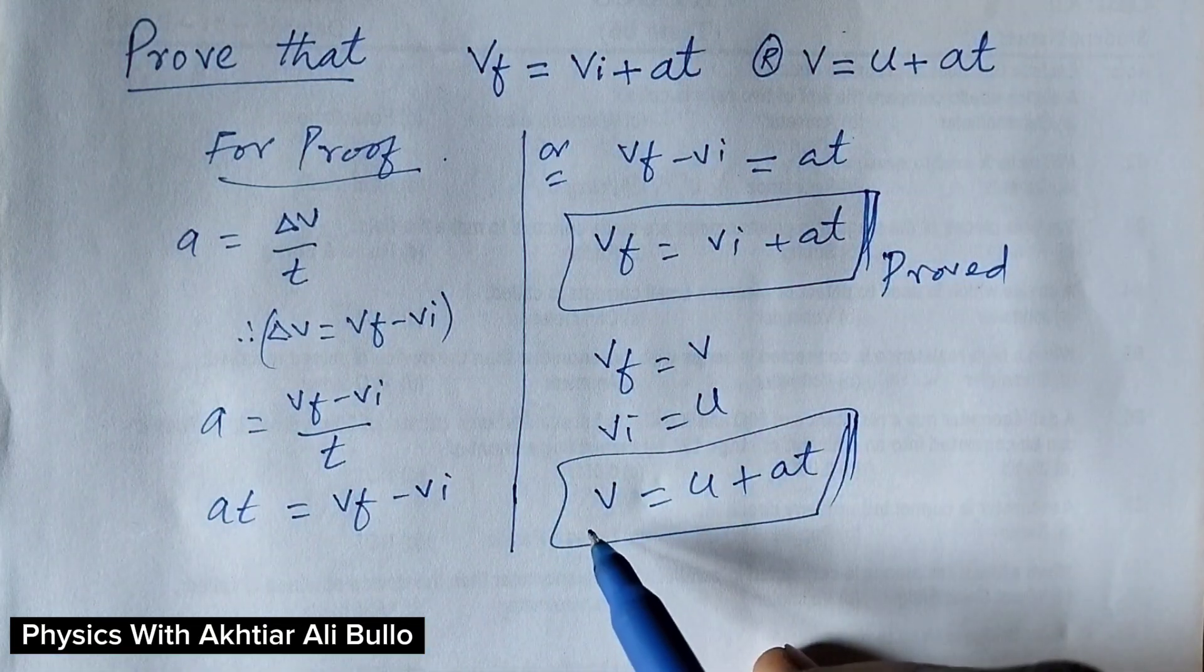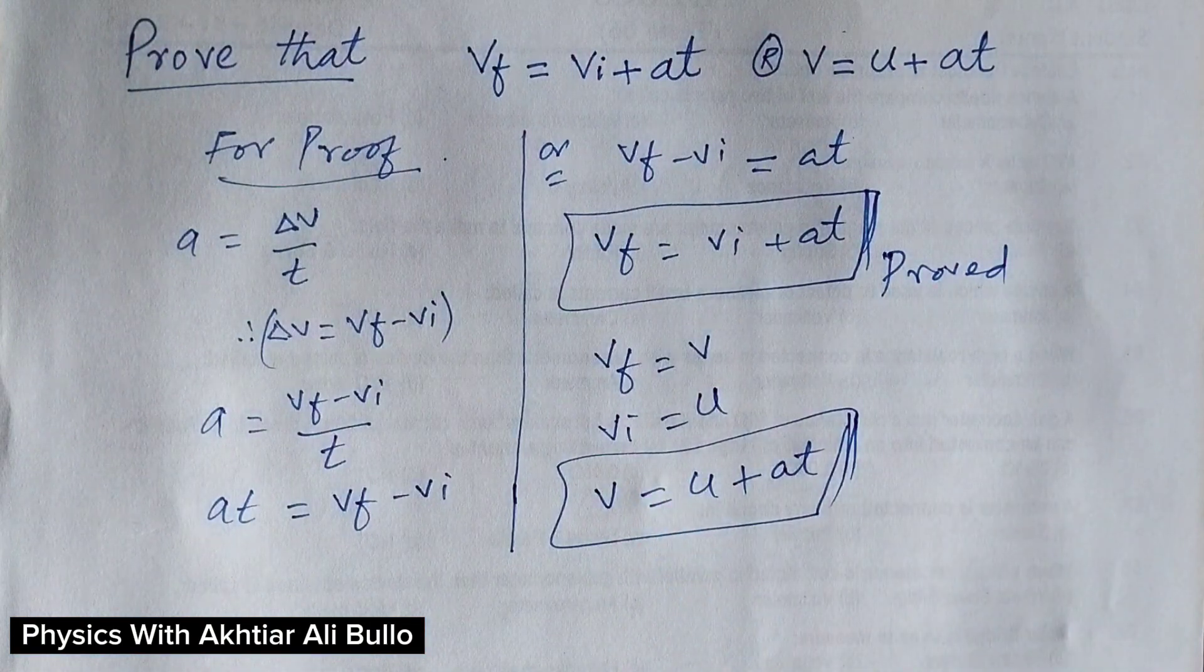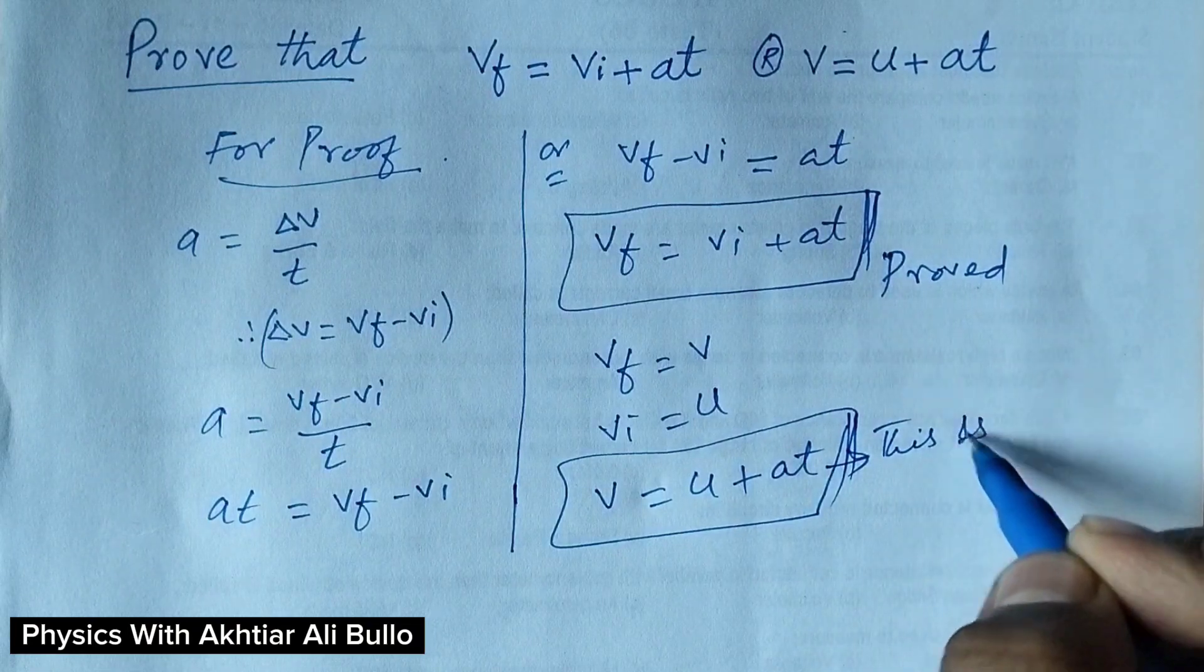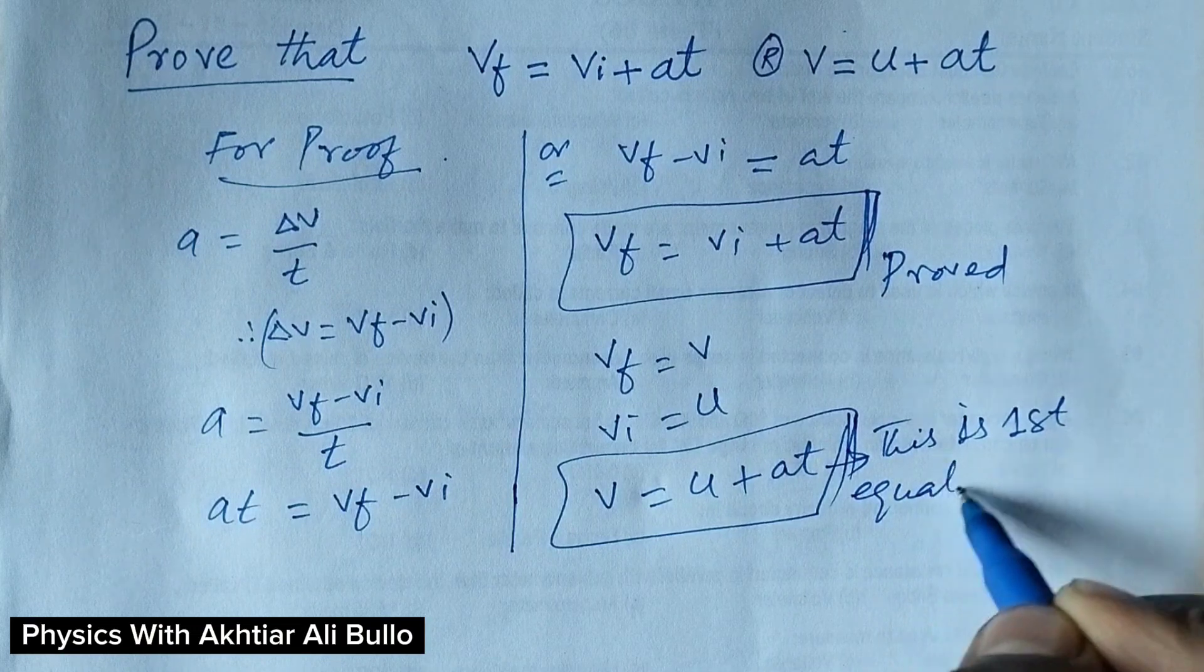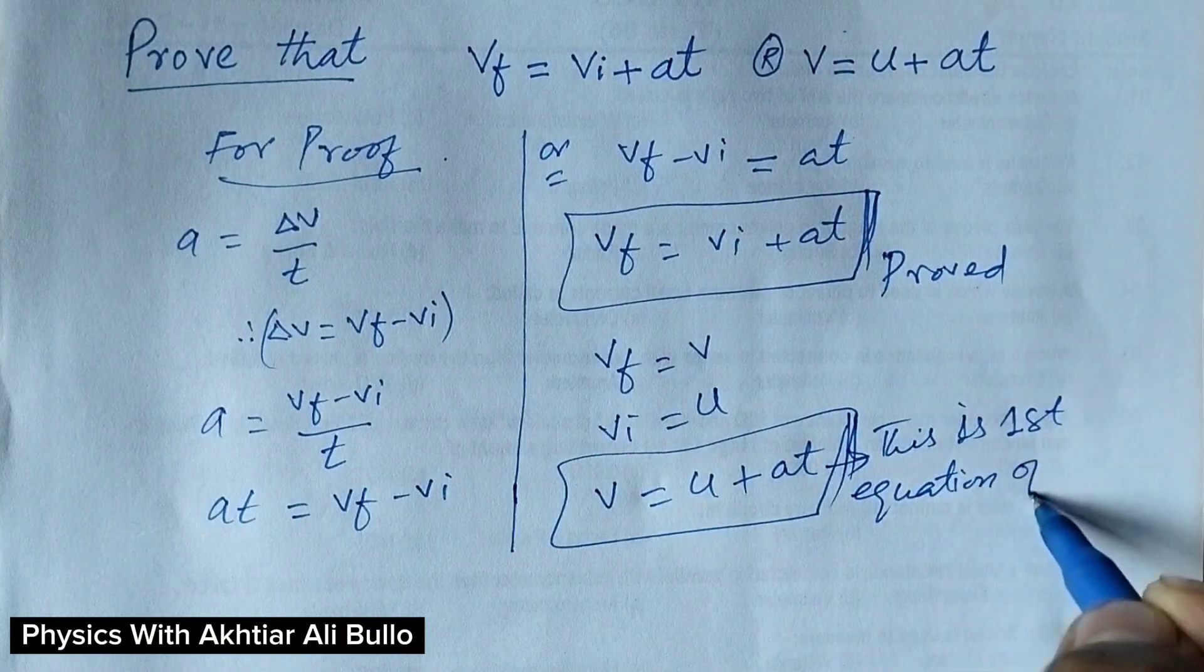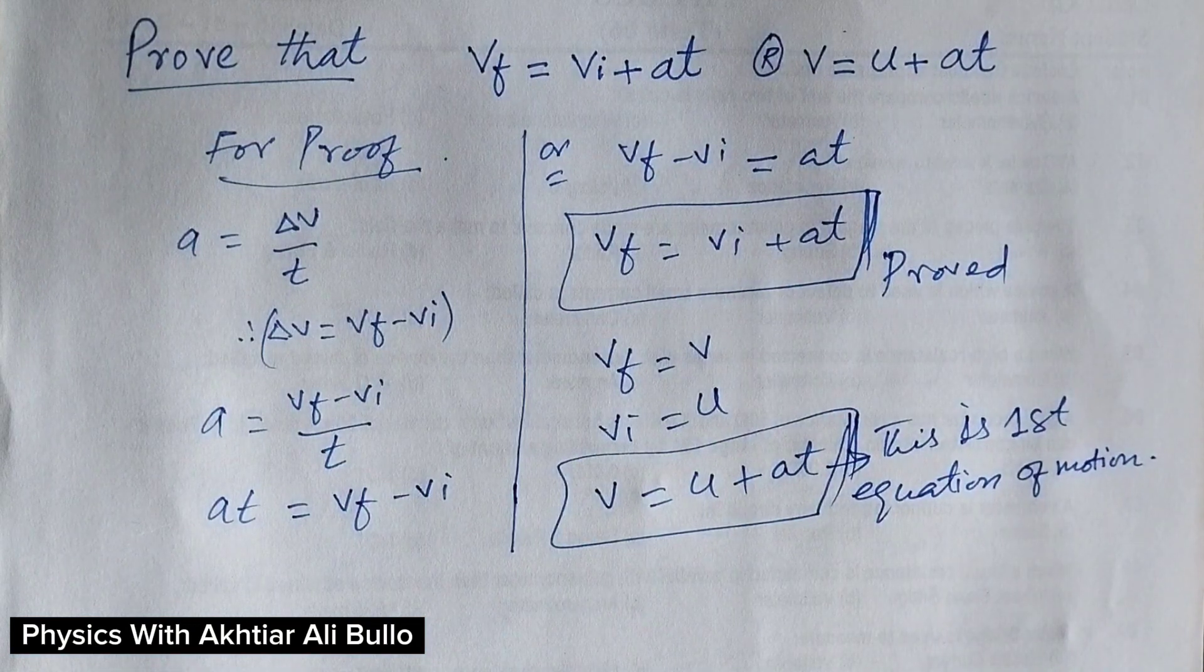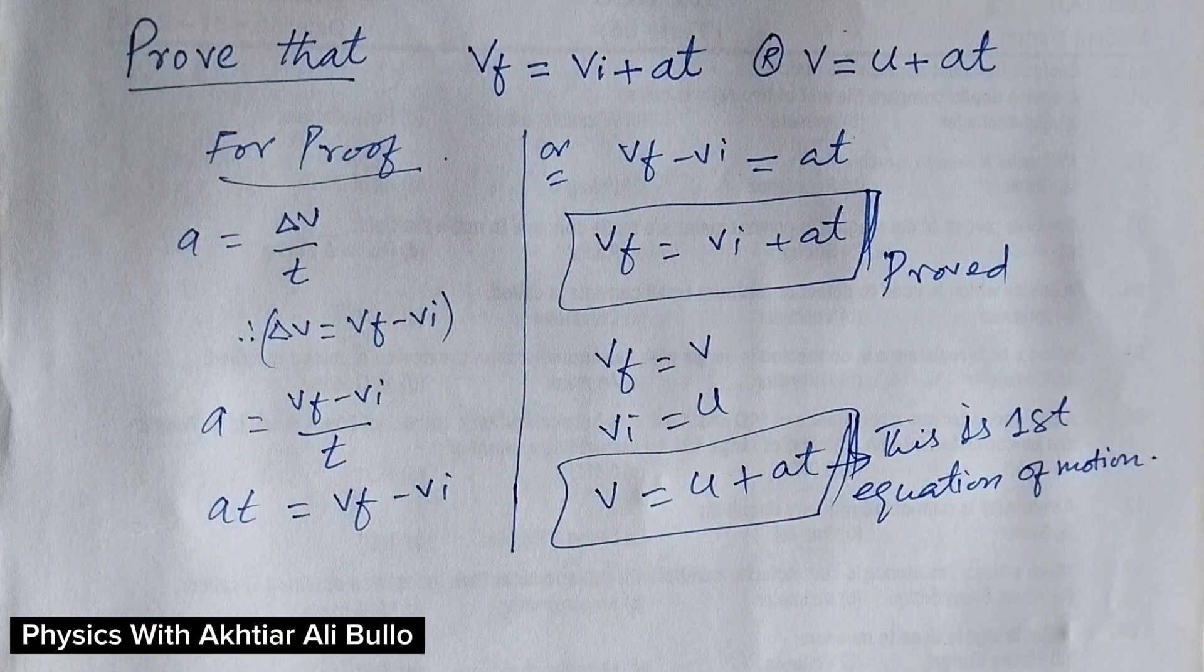Here V stands for VF and U stands for VI. So this is the first equation of motion. These equations are used for linear motion.